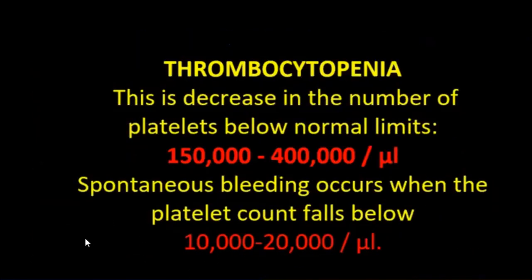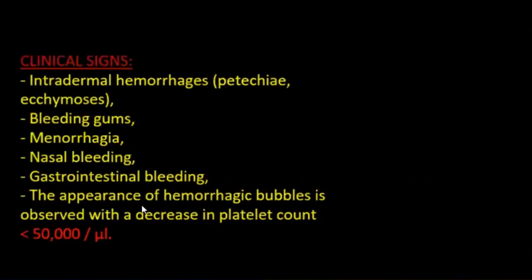Thrombocytopenia is a decrease in the number of platelets below normal limits. Spontaneous bleeding occurs when the platelet count falls below 10,000-20,000 per mm³ per liter. Clinical signs include intradermal hemorrhages, bleeding gums, menorrhagia, nasal bleeding, gastrointestinal bleeding, and appearance of hemorrhagic bubbles observed with a decrease in platelet count near 50,000 per mm³.